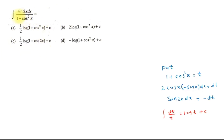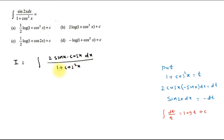Hello dear student, this is your question. In this question we have to find the integration of sin 2x dx divided by (1 + cos²x). First we write sin 2x as 2 sin x cos x, so I equals the integral of 2 sin x cos x dx divided by (1 + cos²x). If we put 1 + cos²x equal to t, the differentiation of the left-hand side gives 2 cos x·(-sin x) dx equal to dt, that is 2 sin x cos x dx equals -dt.